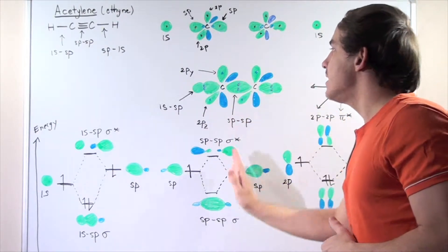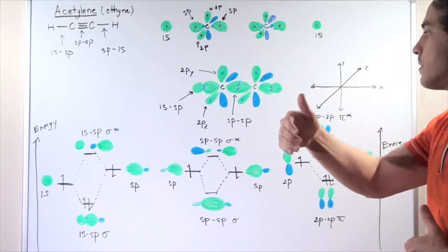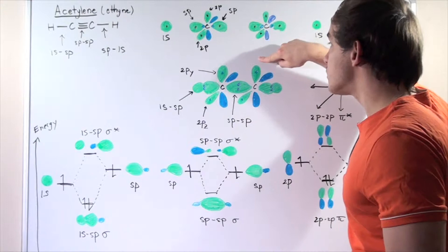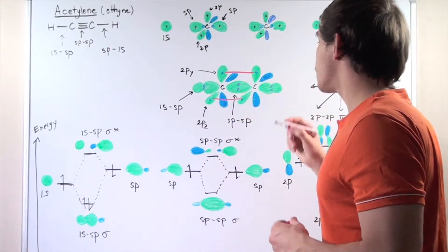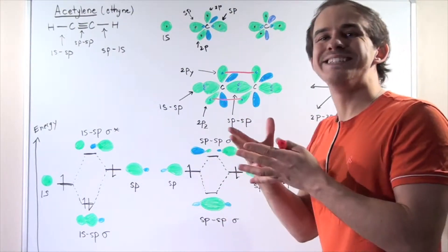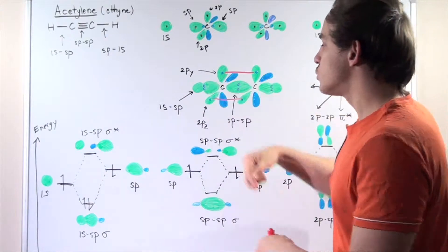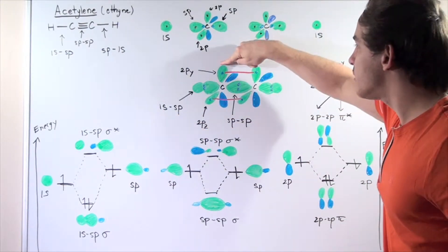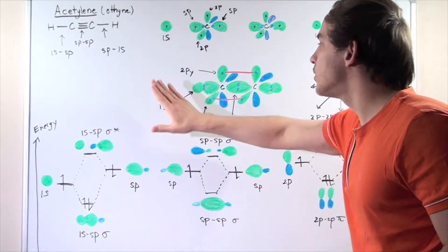We have one pure P orbital in the y-direction — y being up — and we have one pure P orbital in the z-direction, z coming out of the board. There will be an overlap between our two P orbitals that are parallel in the same plane: these two orbitals will interact, and these two orbitals will interact. Since these two orbitals are along the y-axis and these two are along the z-axis, they're perpendicular to one another. Both sets of P orbitals are also perpendicular to the 1S-SP and the SP-SP bonds, which are all along the x-axis, while the P orbitals are along the y and z axes.